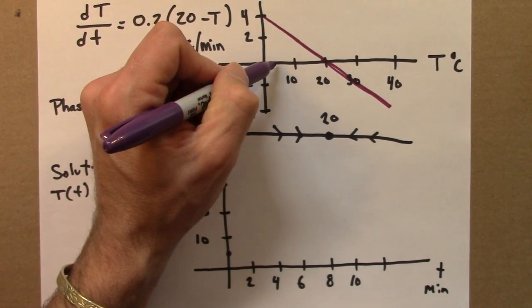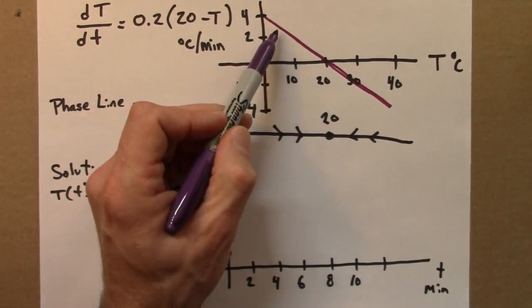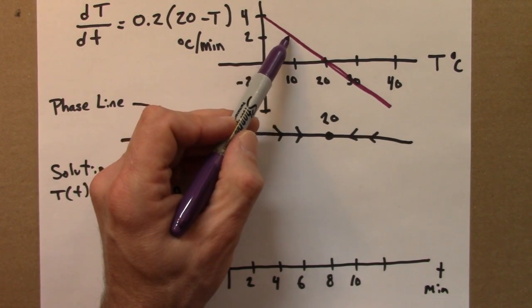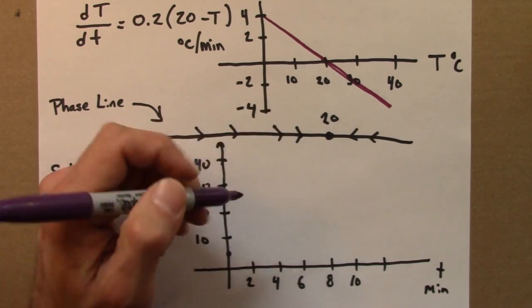I know I'm going to start at a rapid rate of increase, because this function has a large value. The rate of cooling is large, and the rate of cooling gets smaller and smaller as I approach 20.